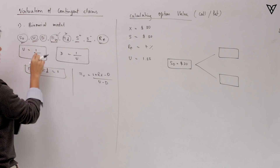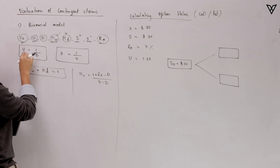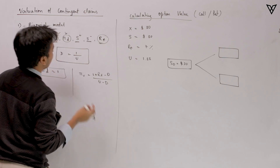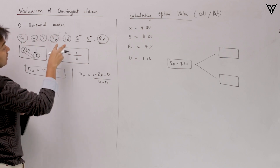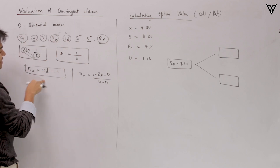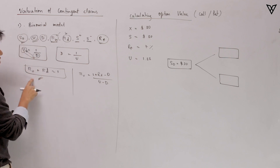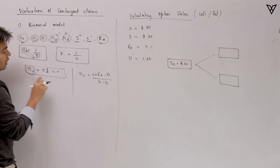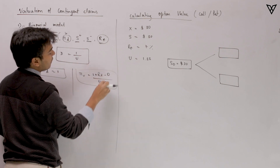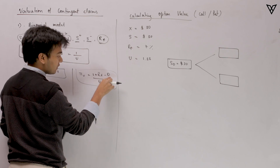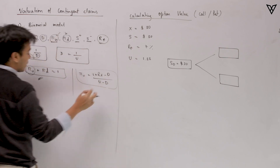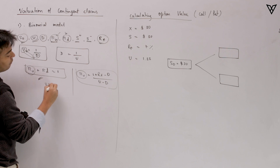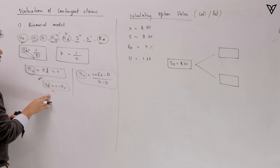U has a relationship with the down factor as follows: U equals 1 divided by D, or equivalently, D equals 1 divided by U. Pi U and Pi D must sum to 1, so Pi U plus Pi D equals 1. Pi U is calculated using the formula: Pi U equals (1 + RF − D) divided by (U − D). Once we have Pi U, Pi D is simply calculated as 1 minus Pi U.